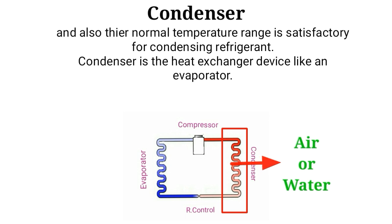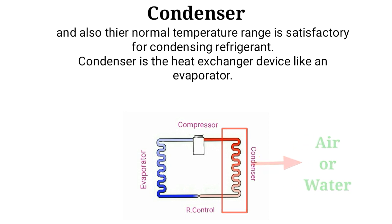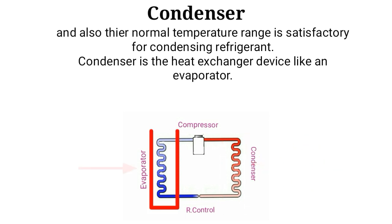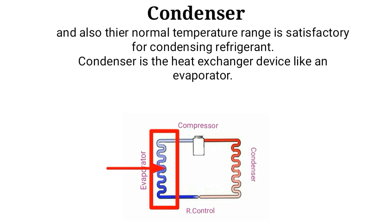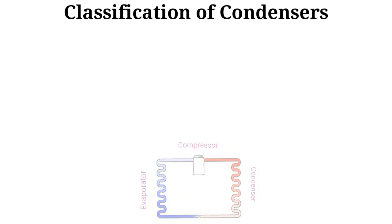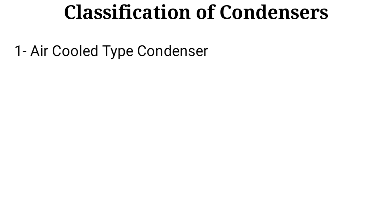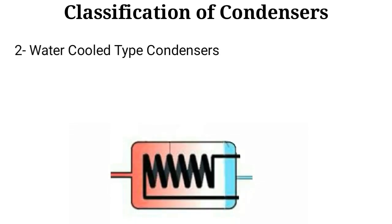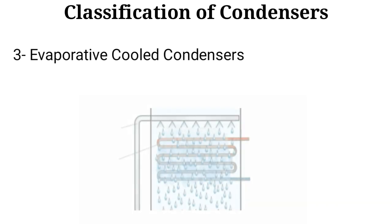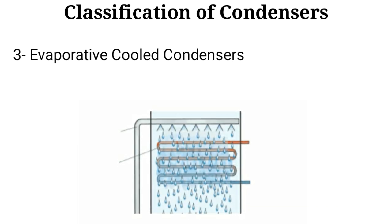The condenser is also a heat exchanger, like an evaporator. Condensers may be classified into three categories: number one, the air-cooled type condenser; number two, the water-cooled type condenser; and number three, the evaporative-cooled type condenser.